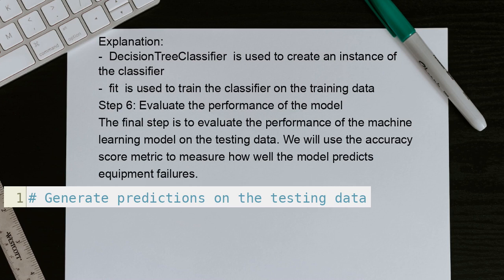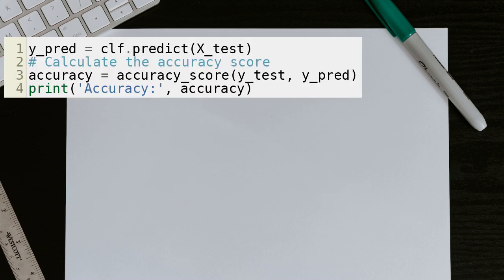Step 6: Evaluate the performance of the model. The final step is to evaluate the performance of the machine learning model on the testing data. We will use the accuracy score metric to measure how well the model predicts equipment failures. And here is the rest of the code.